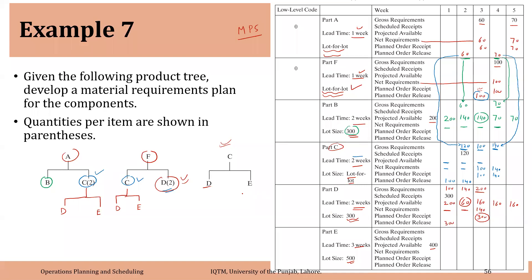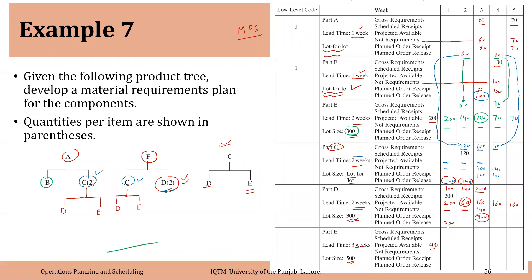Finally, component E is a component of C, and one E is required for each C. Its requirement comes from C's planned order releases: 100 in week 1 and 140 in week 2. We already have 400 available. After meeting the demand of 100, we are left with 300 — no net requirements. After meeting the demand of 140 in week 2, we are left with 160, which carries forward through weeks 3, 4, 5, and 6. If we had any requirements, we would place an order of 500 (lot size policy for E).